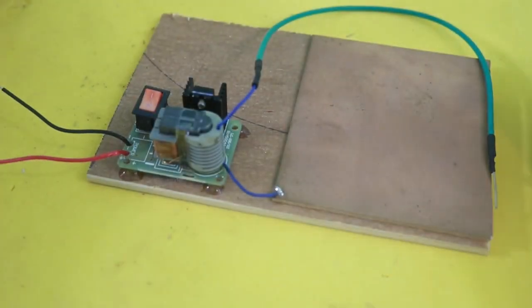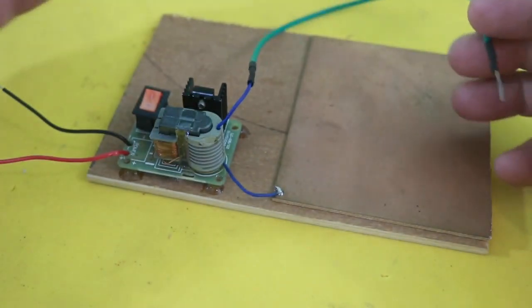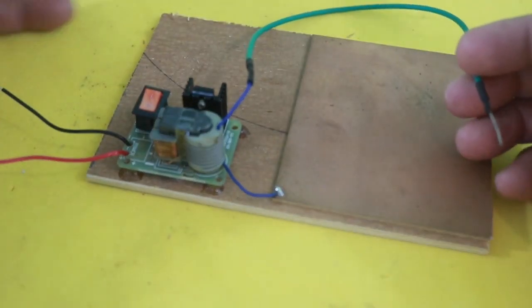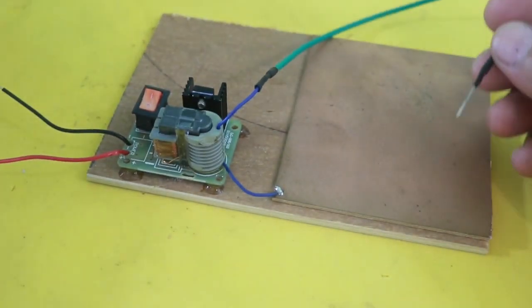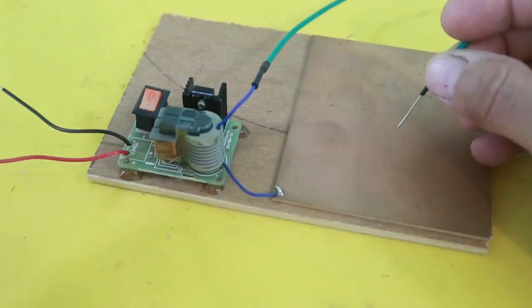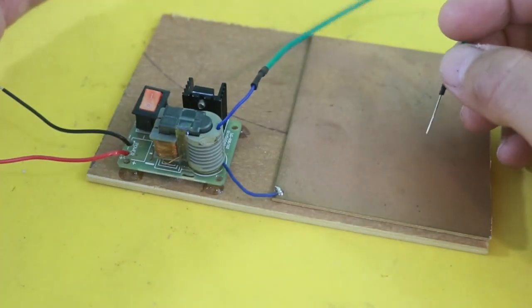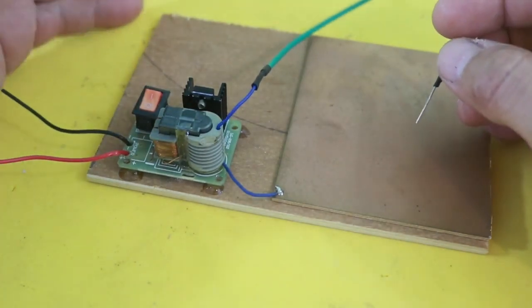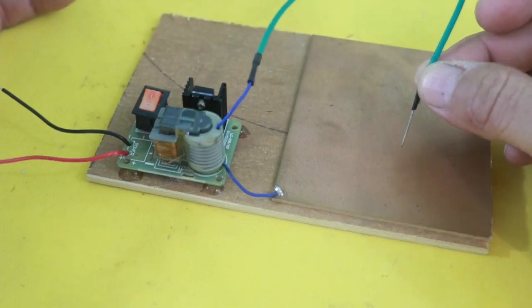In a commercial plasma cutting machine the power of course is much larger and also there is a continuous flow of gas between the electrode and the work piece. This gas becomes extremely hot and facilitates the cutting process.